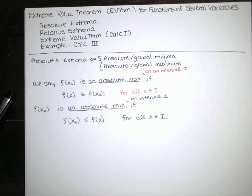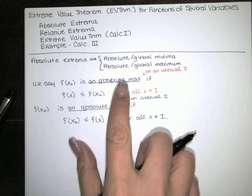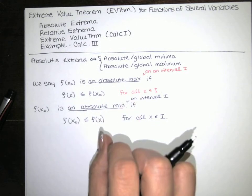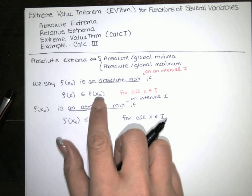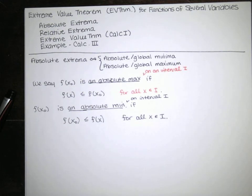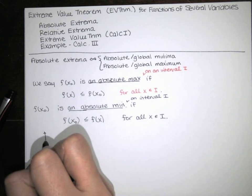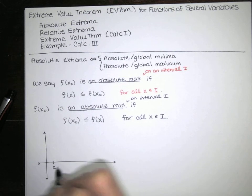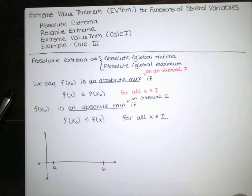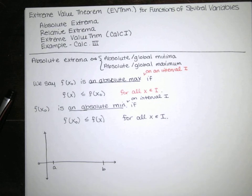We've already discussed what relative extrema are. The relative maximum is the largest y value in some neighborhood, and a relative minimum is the smallest y value in some neighborhood. So let's look at a function and identify absolute mins, relative mins, absolute maxes, and relative maxes.